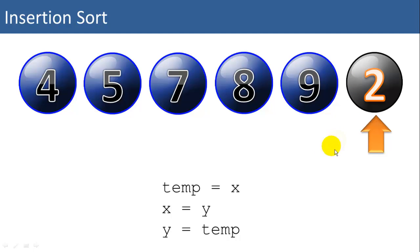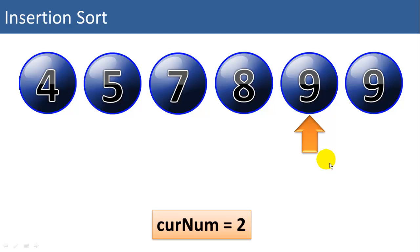Now we can cut that down considerably by copying 2 into a temp variable called currentNum or currentNumber. And then we'll do our comparisons. If 2 is less than 9, we'll simply write 9 over the top of the 2. And if 2 is less than 8, we'll write an 8 over the top of the 9. If 2 is less than 7, we'll write a 7 over the top of the 8. And so on.